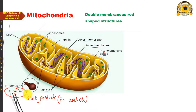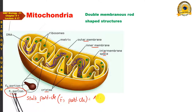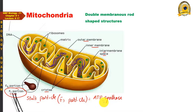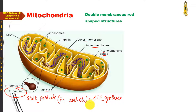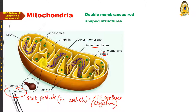The F1 particle is the most important part of the Stalk particle. It acts as an enzyme — specifically, ATP synthase. This enzyme is involved in the formation of ATP; it catalyzes ATP synthesis, which we will discuss in detail during cellular respiration. The F1 particle, or ATP synthase, is also known as oxysome.